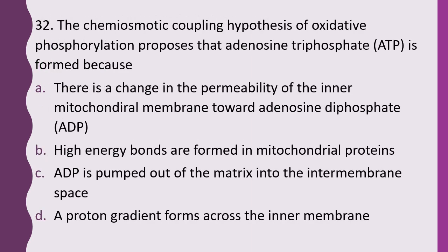Question 32. The chemo-osmotic coupling hypothesis of oxidative phosphorylation proposes that ATP is formed because: there is a change in permeability of the inner mitochondrial membrane towards ADP; high energy bonds are formed in mitochondrial proteins; ADP is pumped out of the matrix into the intermembrane space; or a proton gradient forms across the inner membrane. The correct answer is option D — a proton gradient forms across the inner membrane, which is responsible for ATP synthesis.